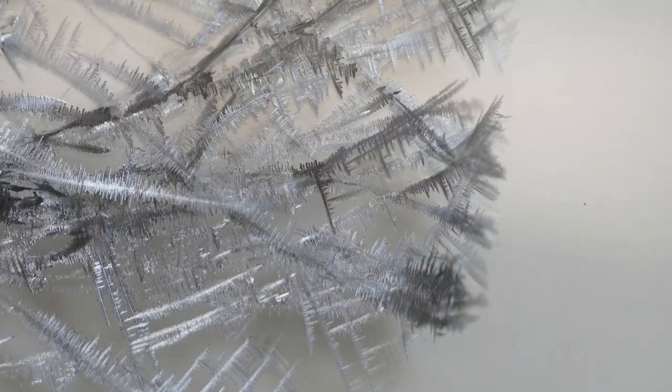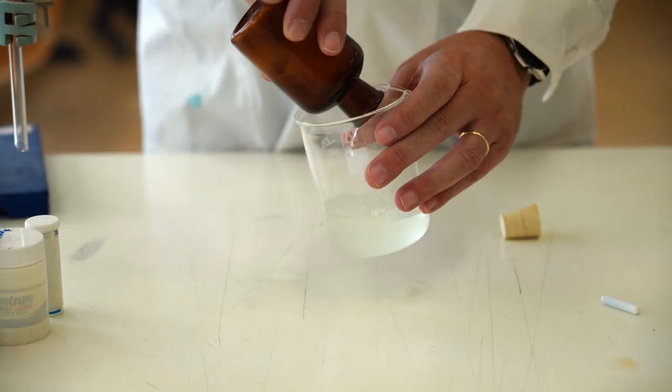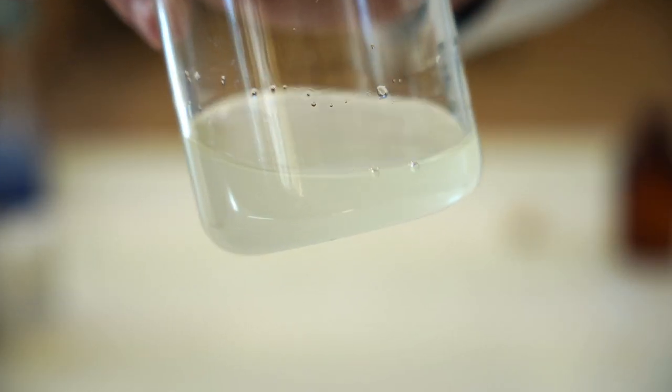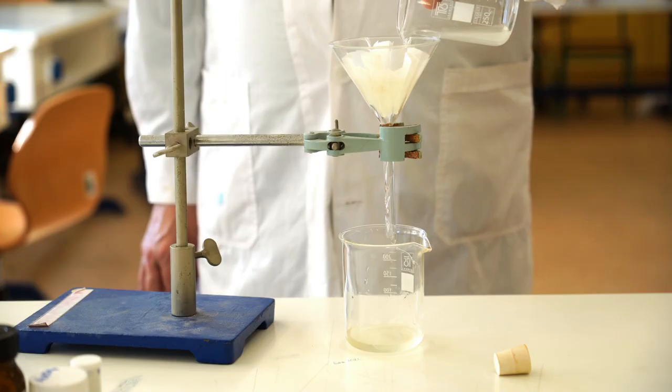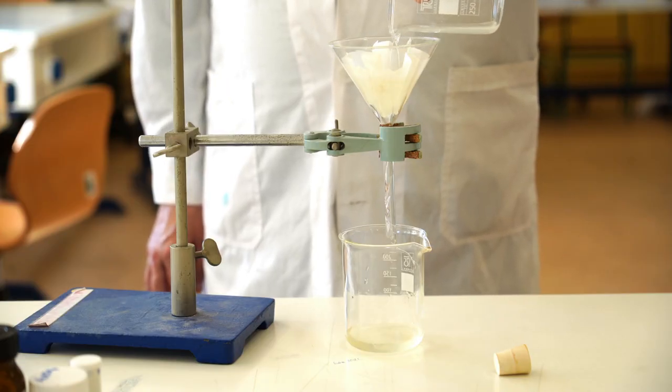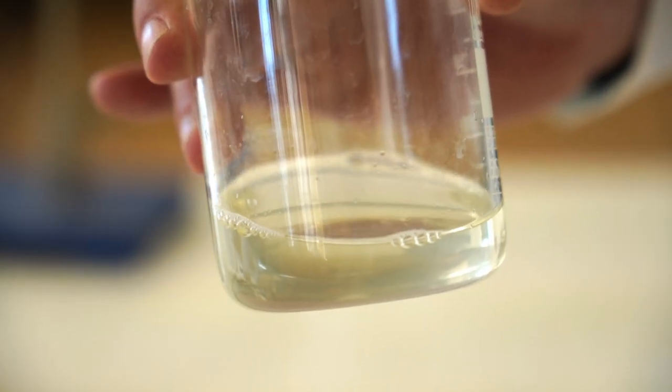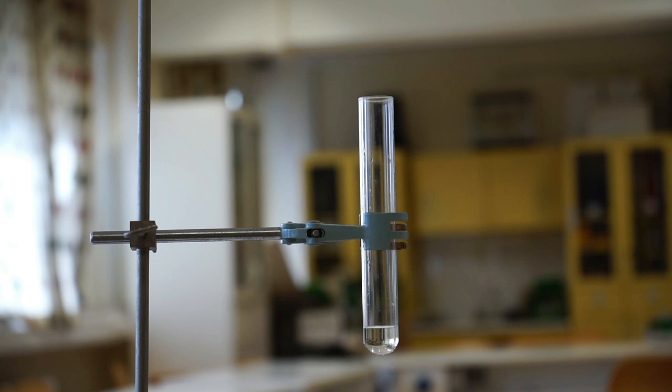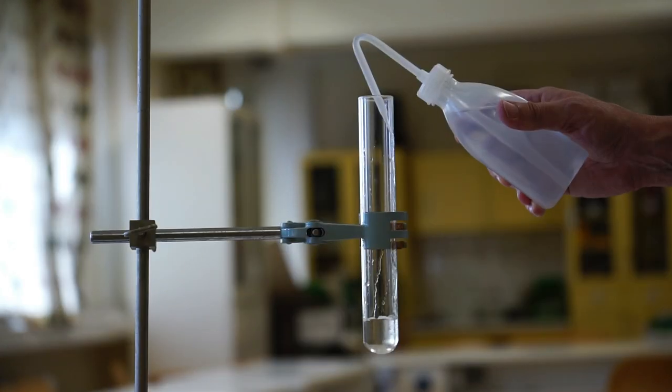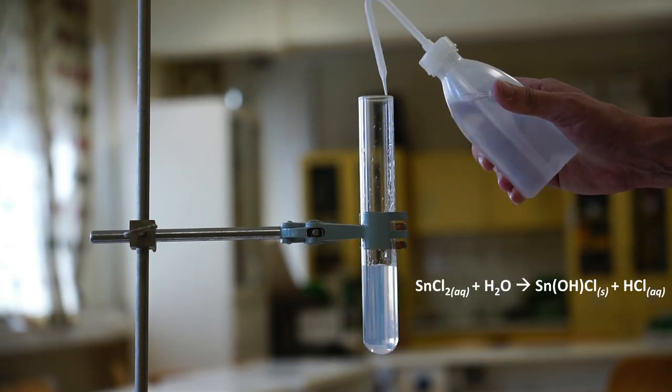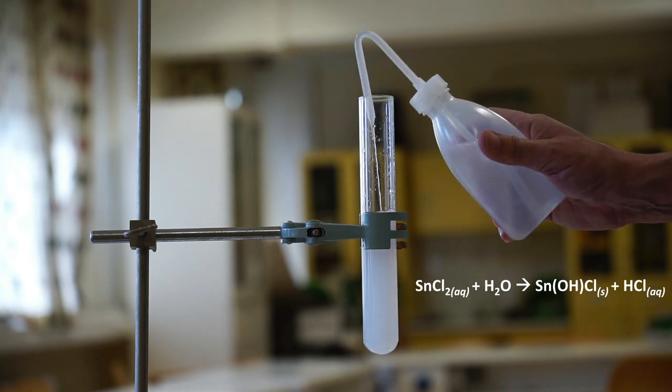When I tried again the next day I found out a white precipitate in the solution. And even after filtering the solution was yellowish and unsuitable for a nice result. This happens because tin chloride reacts with water, aka hydrolysis, producing the insoluble tin hydroxide chloride.